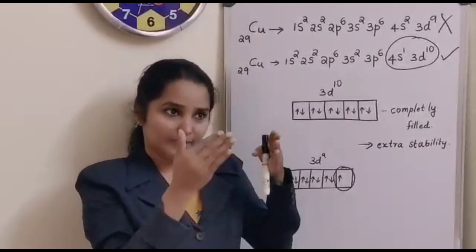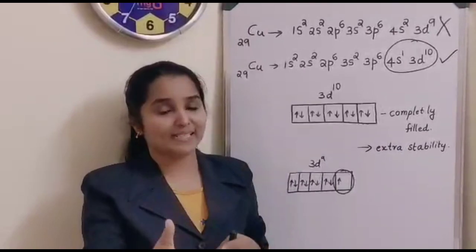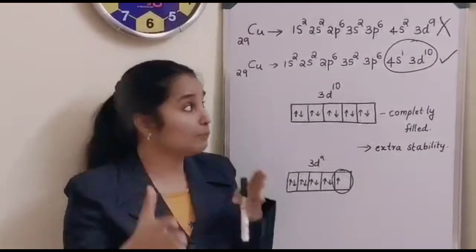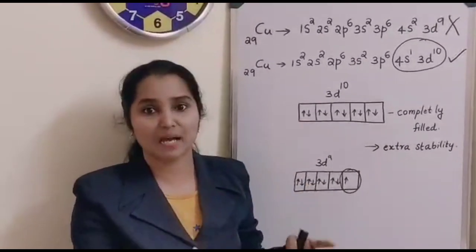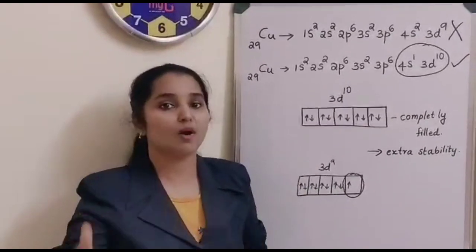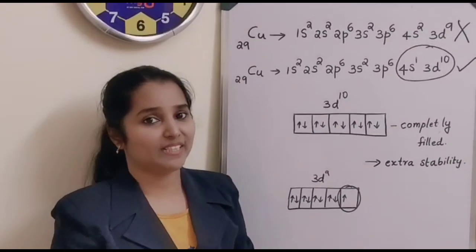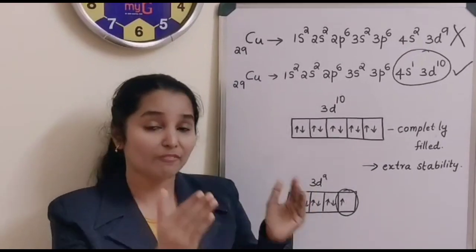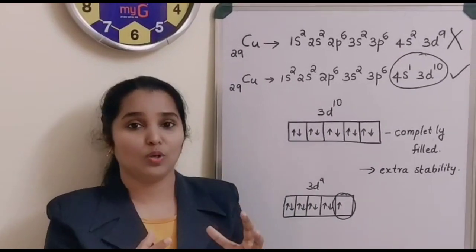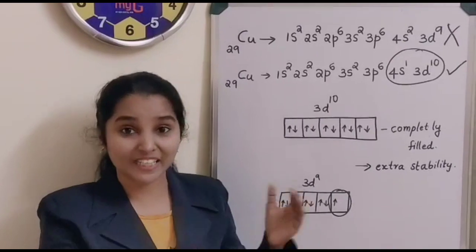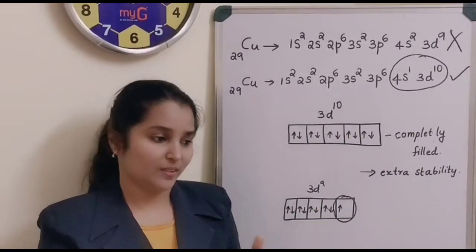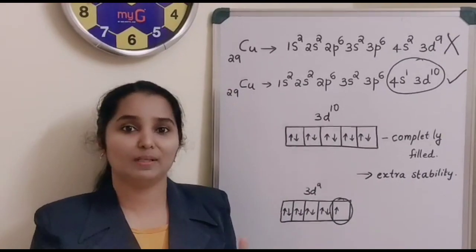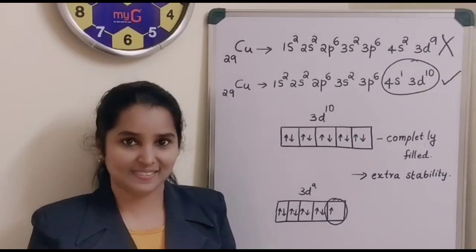So the stability of completely filled and half-filled orbitals can be explained by taking the examples of chromium and copper. I hope you have understood about the stability offered by completely filled and half-filled orbitals, and how atoms make use of it. This is all about our class today. We shall wind up this session and meet again in the next session. Thank you.